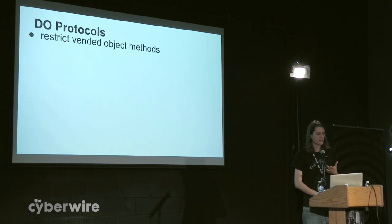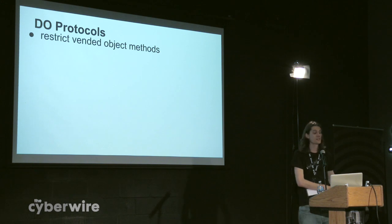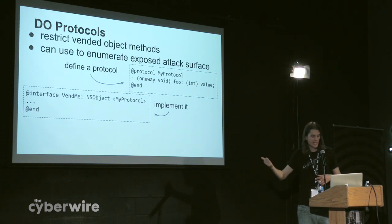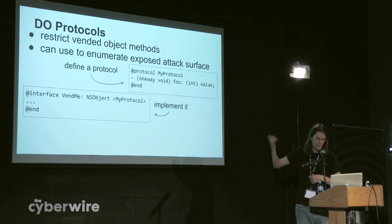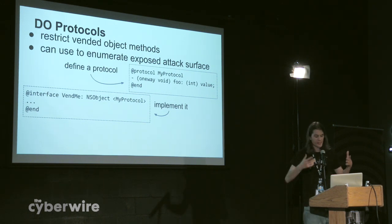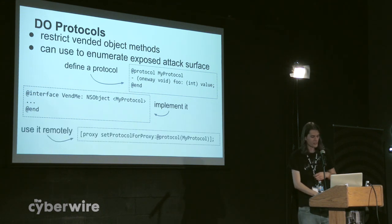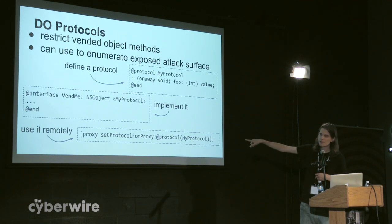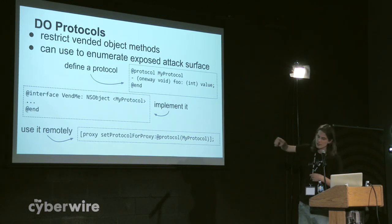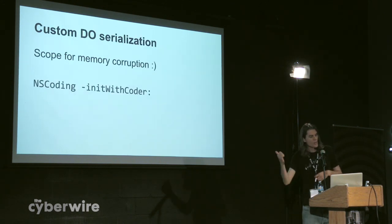You can have distributed object protocols, which basically say: I have this big object with all of these crazy methods, but all I want you to be able to call is the foo method. You could define a protocol with just one method in it. Then when you declare the VendMe interface, you can use the angle bracket syntax to say this is a VendMe object inheriting from NSObject that implements MyProtocol. When you want to use that, you can call setProtocolForProxy. On the sending end, this is only an optimization. But on the receiving end, it is actually going to try and enforce that only those messages are sent. NS coding is also what is used for serializing custom classes that distributed objects doesn't know about — you define your own NSCoding initWithCoder method and can create an object from bytes.